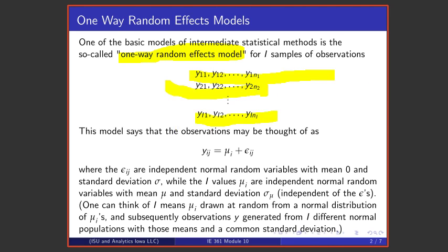This model says that these samples may be thought of as coming from normal distributions with a common variance but means that themselves vary according to some normal distribution.